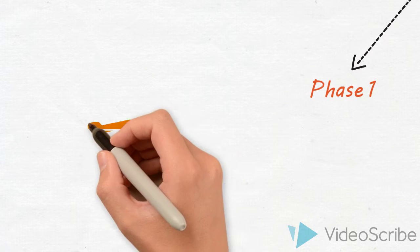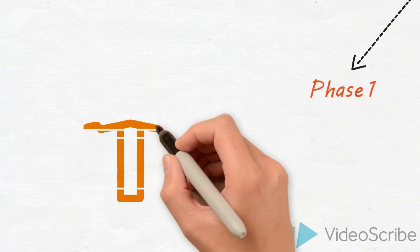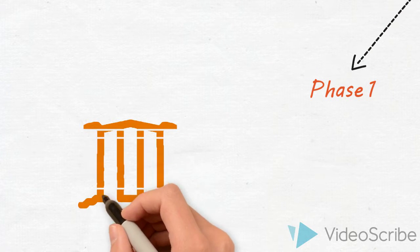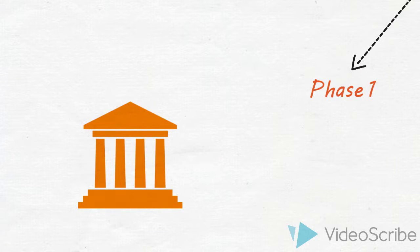In phase one, we'll identify the governance model. We'll find out how changes get planned and approved in the organization. Next, we'll determine the level of coordination between project teams, the EA team, and mid to senior level management.